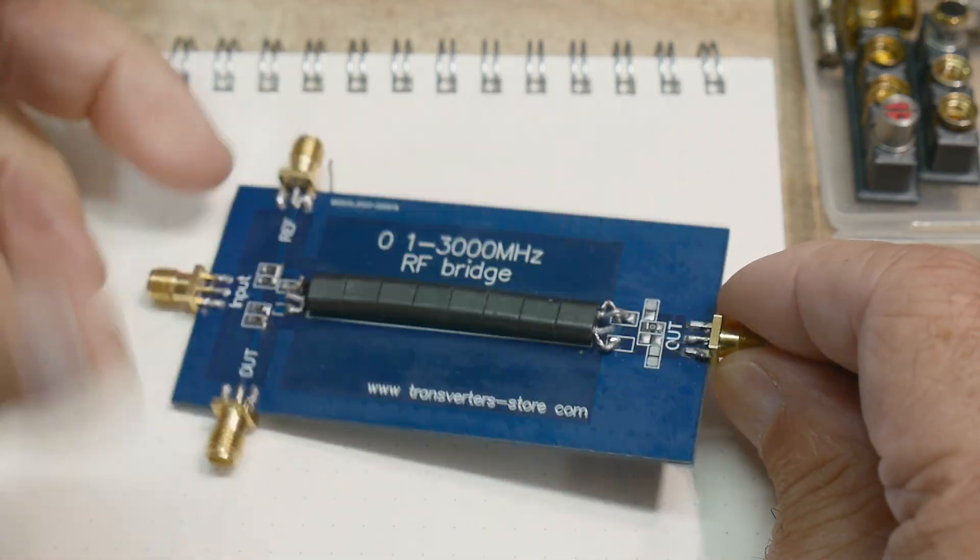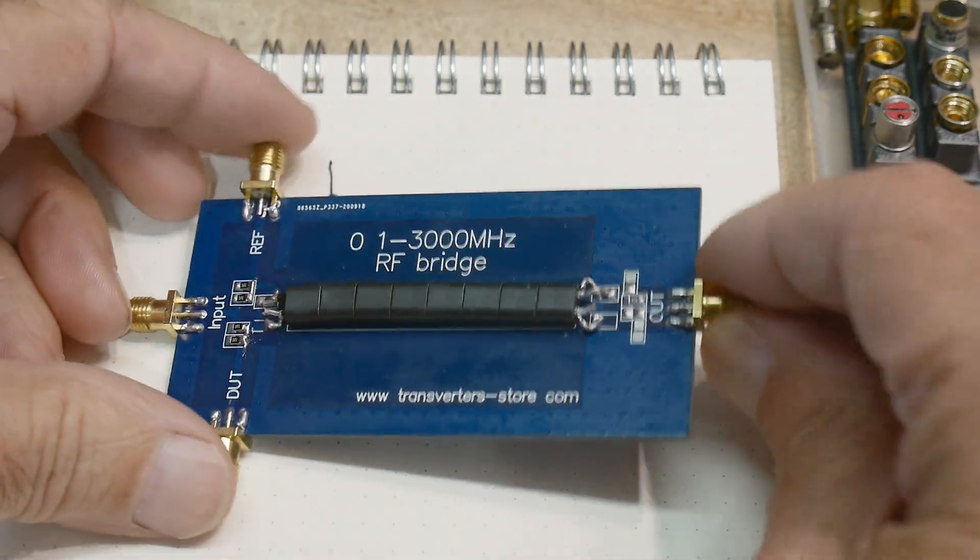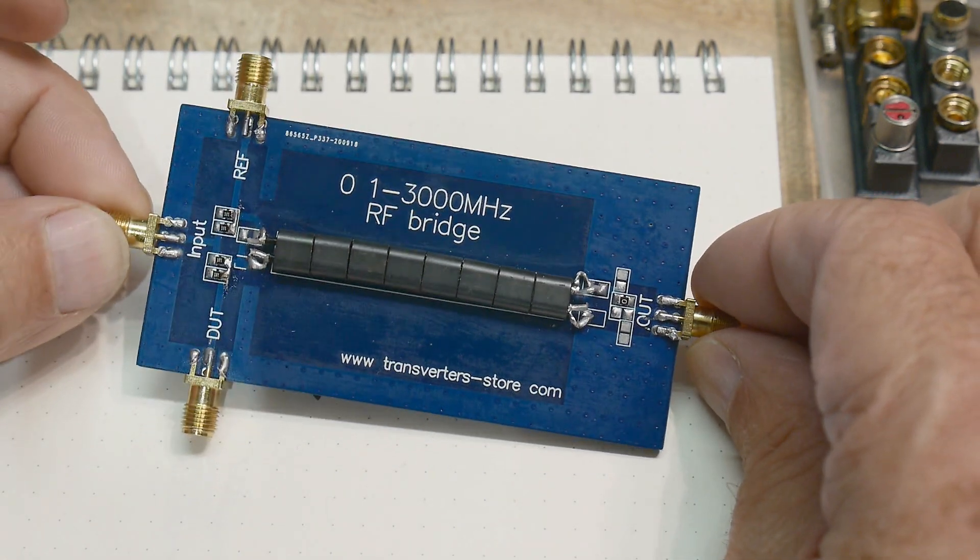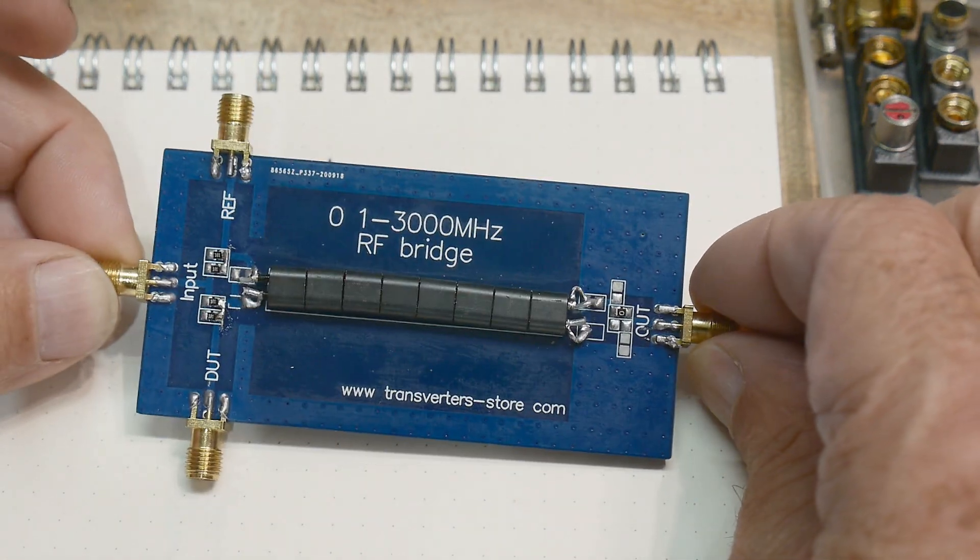It lets you measure return loss or VSWR of antennas and stuff. And so I want to use this with my new spectrum analyzer. So let's take a look at this.